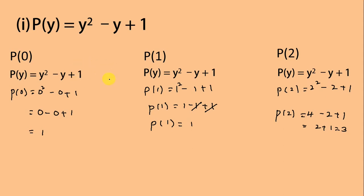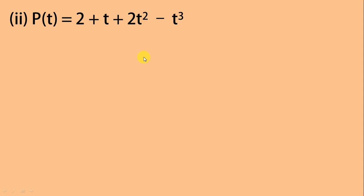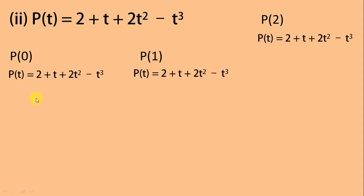Let's move to the next part. In the first step we write what we have to find — p(0), p(1), and p(2). Then we write our polynomial. Now we replace t with 0, t with 1, and t with 2. For p(0) we write: 2 + t is 0 + 2 into 0² - 0³.